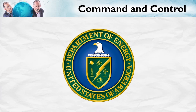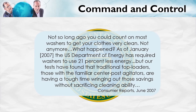So what were the results of this command and control program? Well, here's Consumer Reports: 'Not so long ago, you could count on most washers to get your clothes very clean. Not anymore.' As of January 2007, the U.S. Department of Energy required washers to use 21% less energy. But their tests found that traditional top loaders — those with the familiar center post agitators — are having a tough time wringing out those savings without sacrificing cleaning ability.